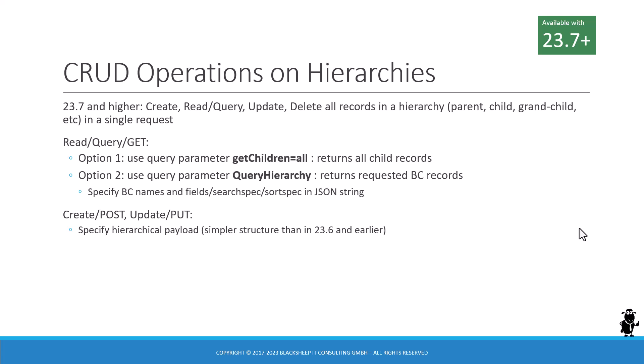We start with looking at the read, query, or GET operations. GET is the translation into the HTTP request you make for query. Oracle provides us with two query parameters that you add to the URL. The first one is called getChildren, which takes a value of 'all', and that will simply go through the entire hierarchy exposed by the integration object — either dynamically generated or provided in the inbound REST API administration, or in older versions the base integration object. So getChildren=all will return any instance of any child and grandchild records in the hierarchy.